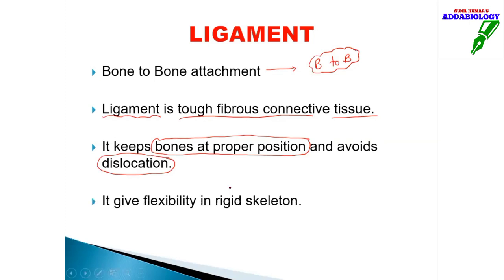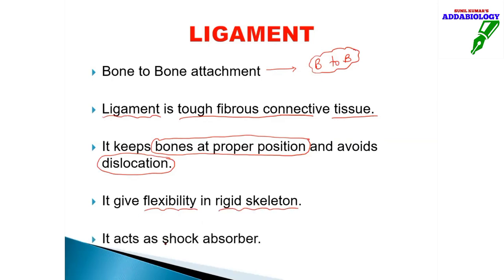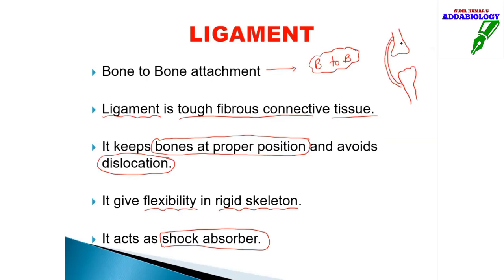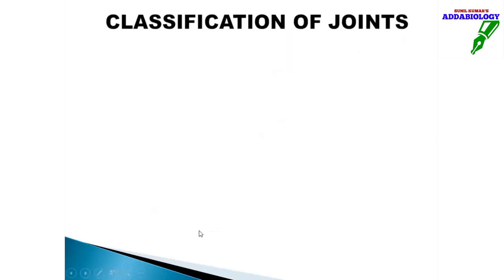Dislocation can lead to fracture. Ligaments also give flexibility to a rigid skeleton and act as shock absorbers — that is the most important function. If I draw one bone and another bone, the bone-to-bone attachment you see between them is nothing but the ligament.